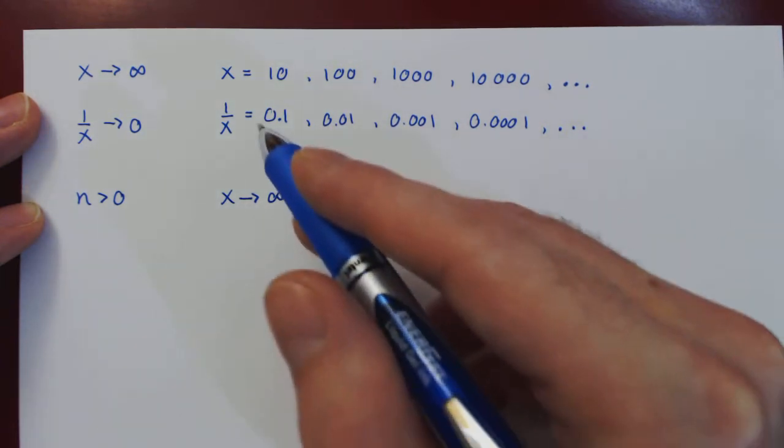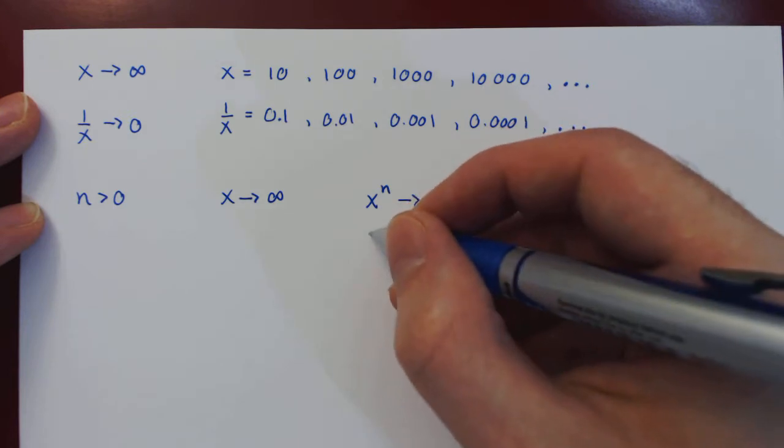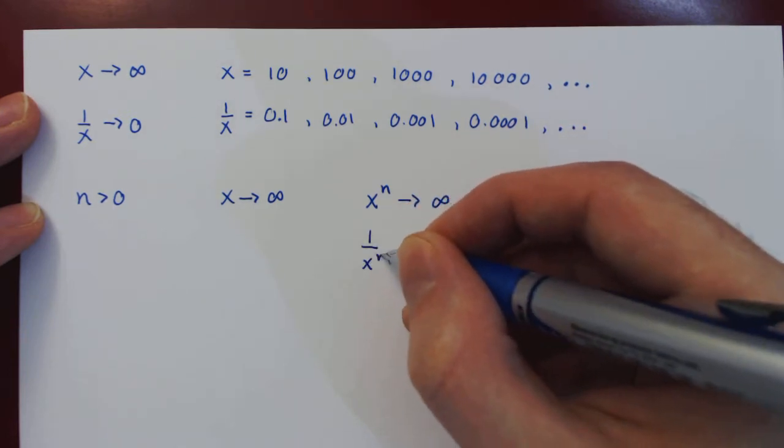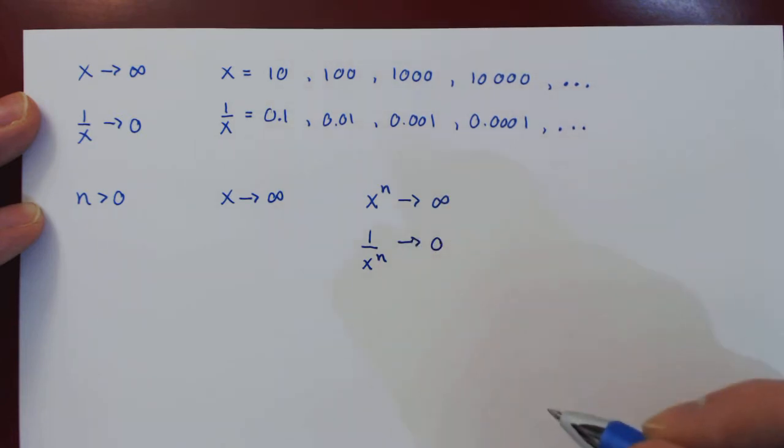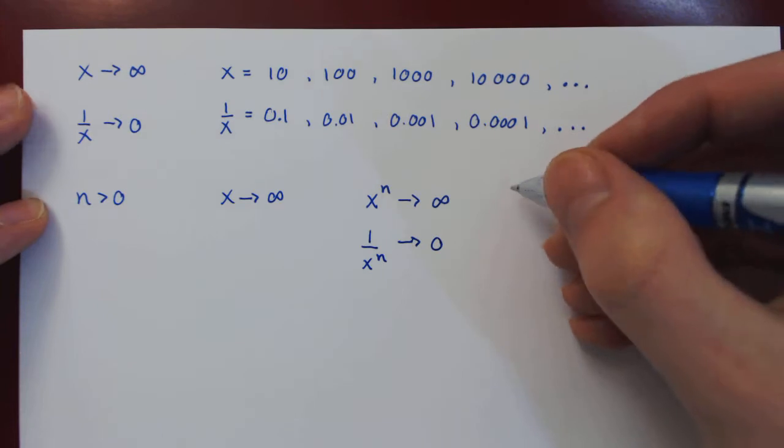And so we can also now look at the reciprocal as well. Since x to the n approaches infinity, 1 over x to the n will be approaching 0. And we can write this using the limit notation.